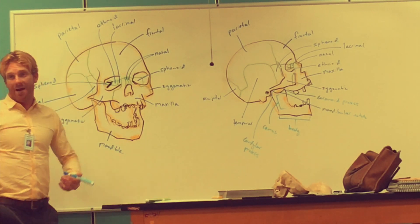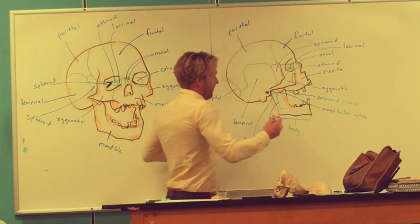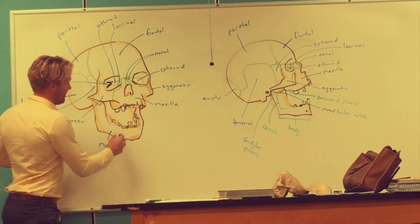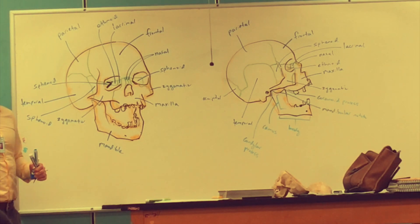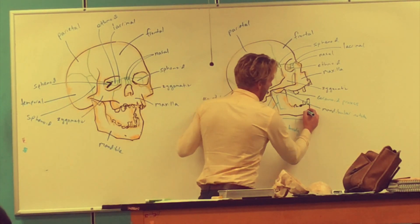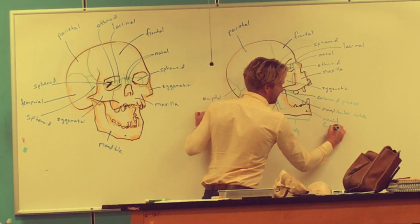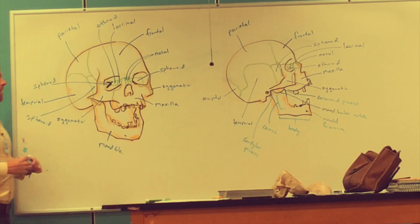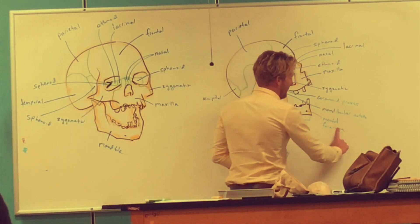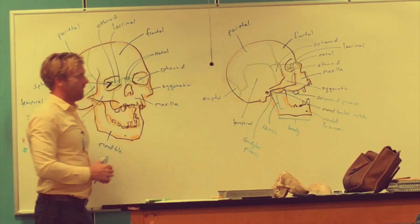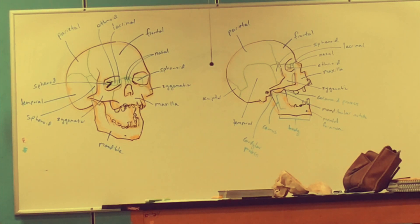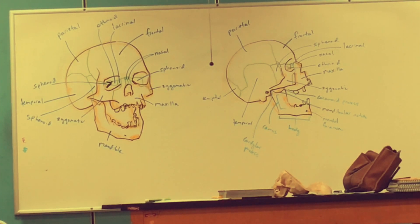We've got two foramina that serve as passageways for blood vessels and nerves. From this view you've got one right here and one right over there — they're in the mental region, the mental foramina. I'm probably going to point to one or two of those on the exam, but it's not going to be anything that's not up there. It'll probably be the body, or the ramus, or the condylar process, or the mental foramina. What's up there is what you need to know for the mandible.